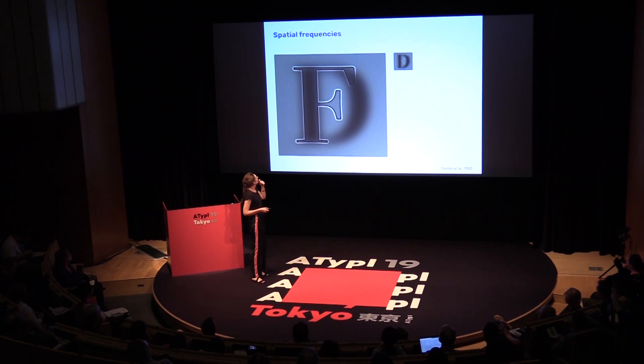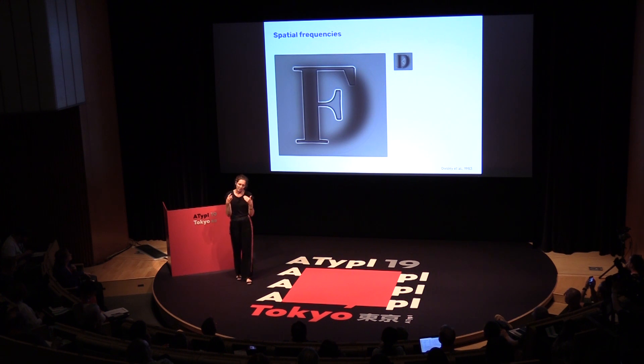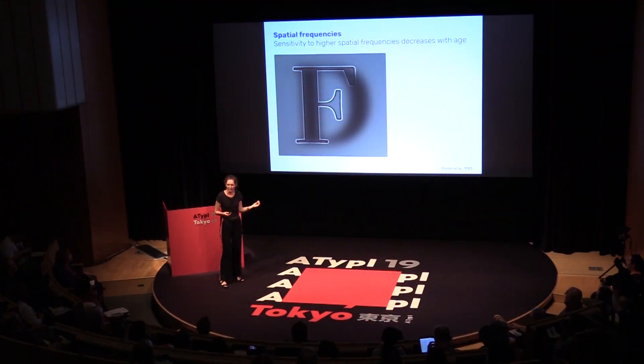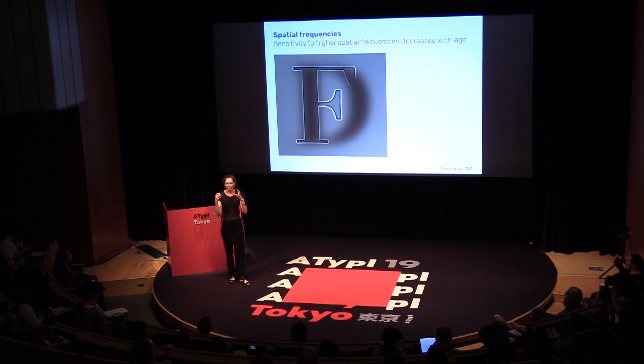That leads to this phenomenon called frequency channels. When we look at the world and see something up close, we see the small details. In the large image we use the higher spatial frequencies and see the 'f'. In the small image we use the lower spatial frequencies, and the details of the 'f' disappear — we see the structure of a blurry 'd'. What happens with age is that the ability to see details in the higher frequencies decreases. So older people can see structure and proportions, but the smaller things become more difficult.